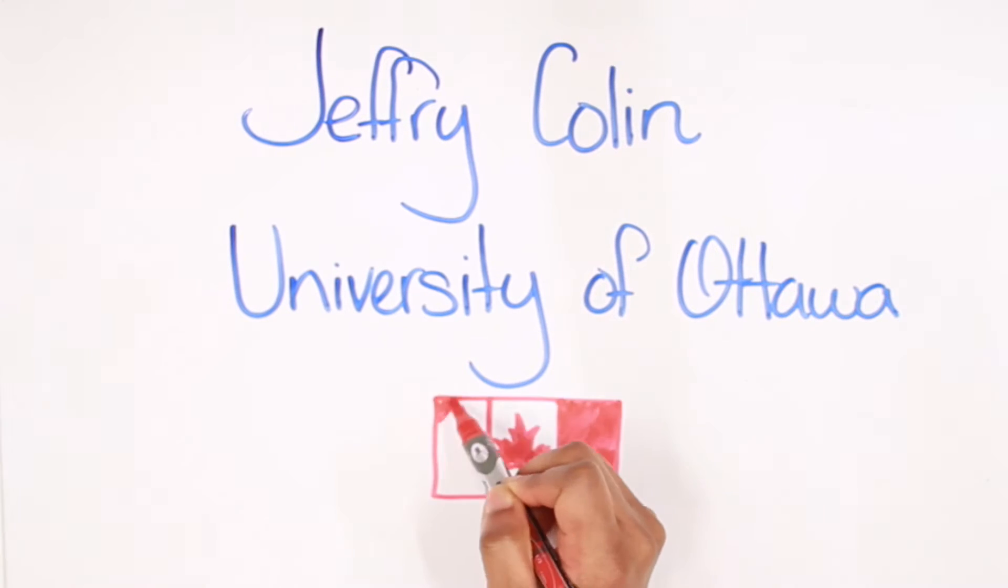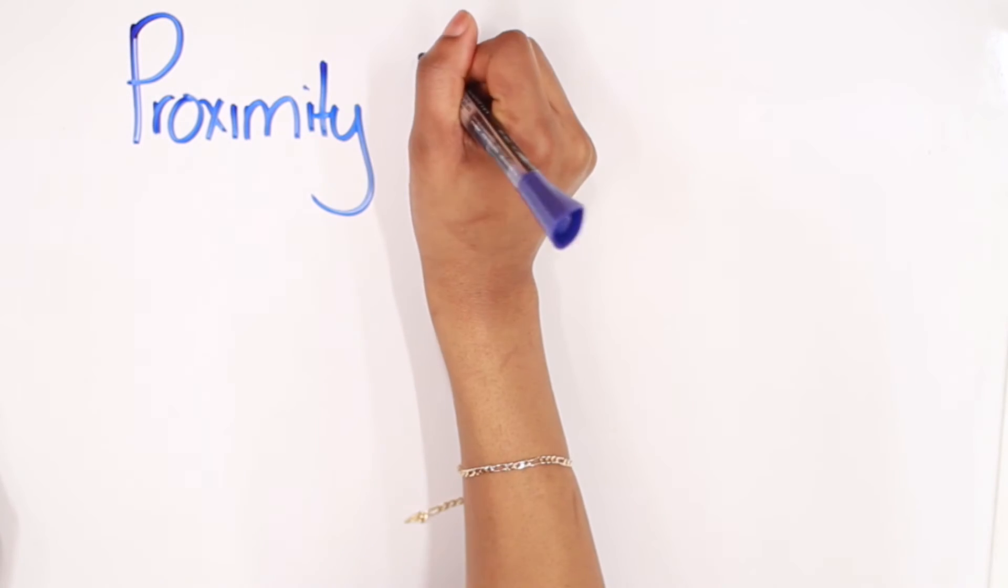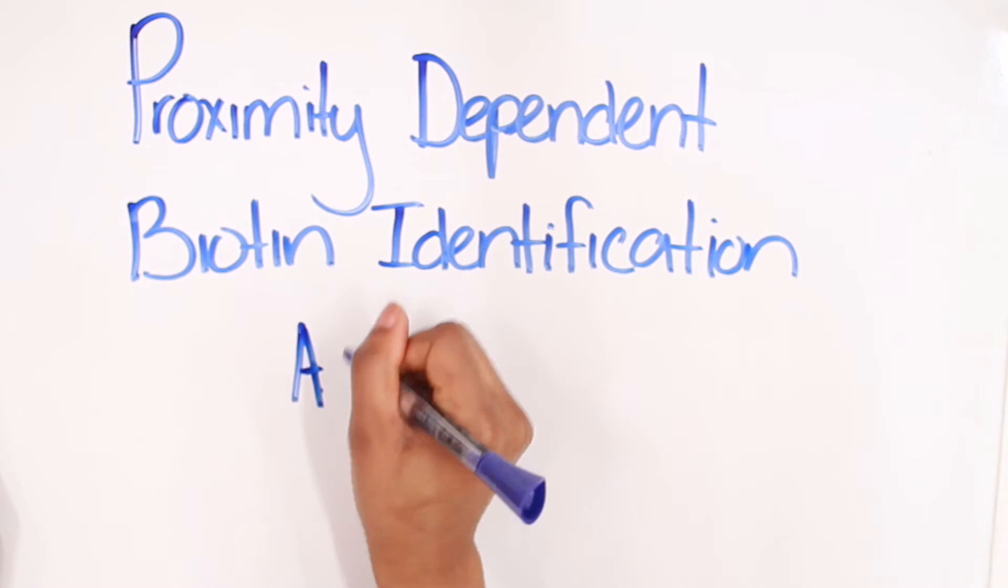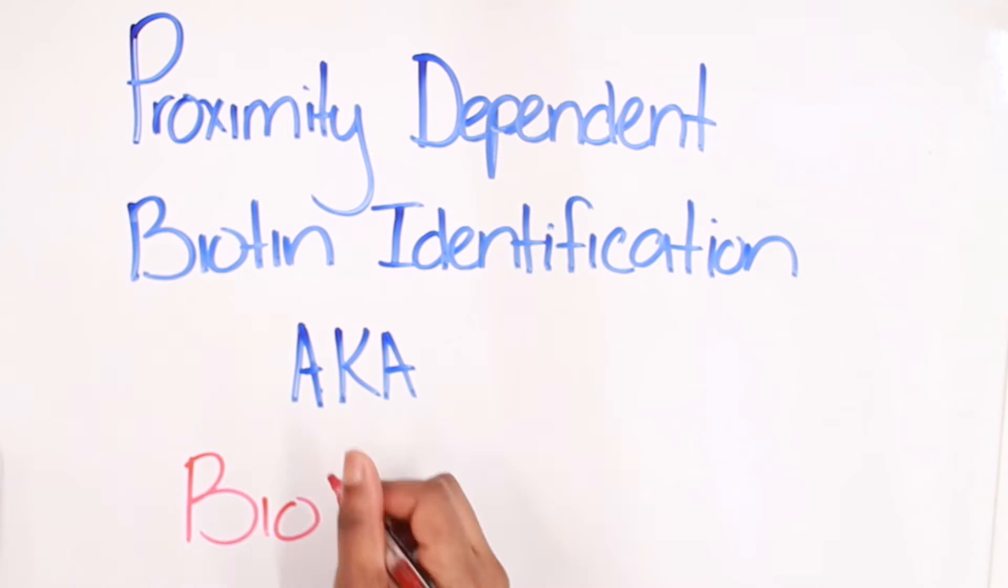Hi, I'm Jeffrey Collin, biochemistry student at the University of Ottawa in Canada. Today I will be talking about proximity-dependent biotin identification, also known as BioID, and its usage in determining protein interactions.